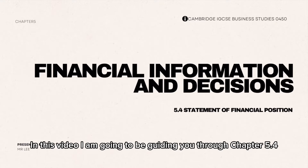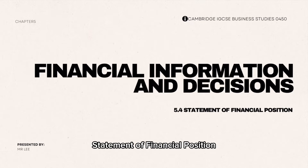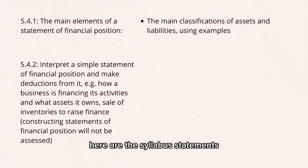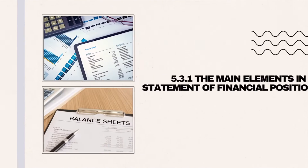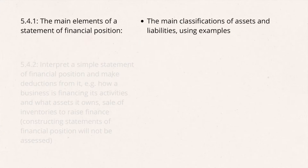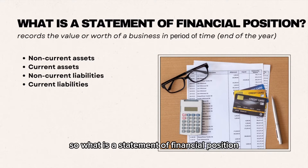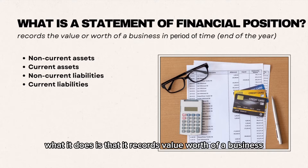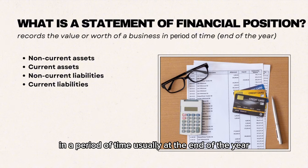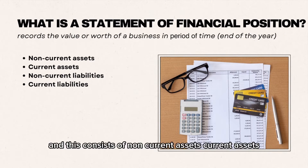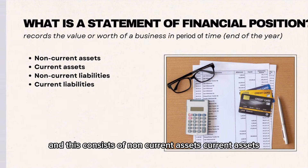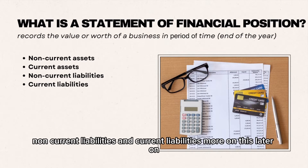In this video I am going to be guiding you through chapter 5.4 Statement of Financial Position. Here are the syllabus statements. So what is a statement of financial position? It records the value or worth of the business at a period of time, usually at the end of the year, and this consists of non-current assets, current assets, non-current liabilities and current liabilities.